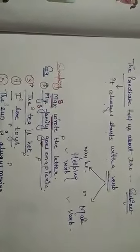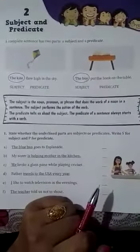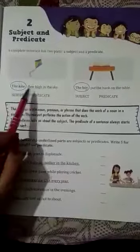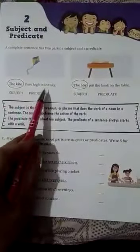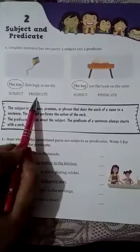So in the same way we can see example of your book also. The kite flew high in the sky. The kite is the subject. Flew high in the sky is predicate. Here, flew is the verb.